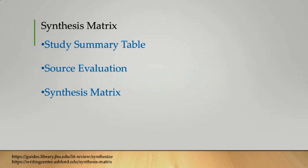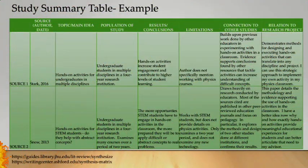A synthesis matrix generally comprises of a study summary table, source evaluation, and finally the synthesis matrix itself. There are several versions of such matrices which are available and you can find some of these versions in the links which are given in these slides.